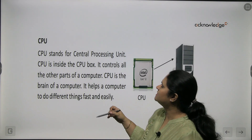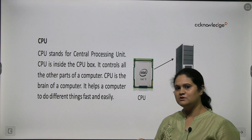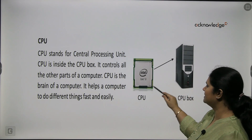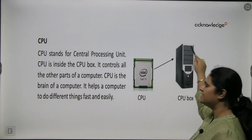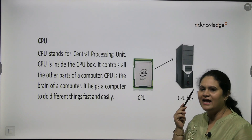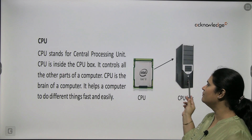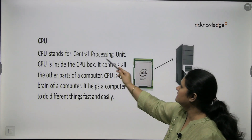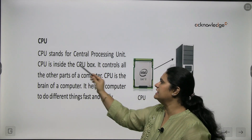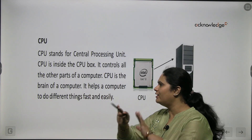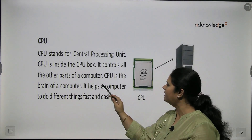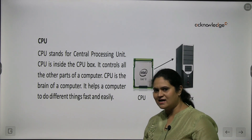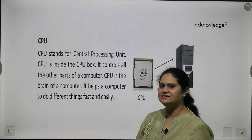Now this is a CPU. What does CPU stand for? The CPU stands for Central Processing Unit. It is inside the CPU box and it is called the brain of the computer. Just like you have a brain, the computer also has a brain that controls its workings. It controls all the other parts of the computer and helps the computer to do different things fast and easily.